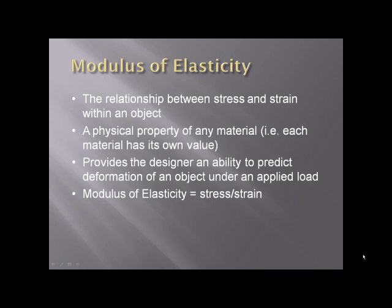That material property is called modulus of elasticity. As a material property, each material has its own modulus of elasticity. Steel is probably a material which, out of all the materials you'll be familiar with, has the highest modulus of elasticity.